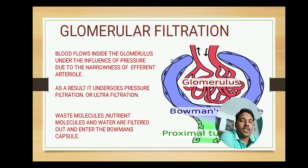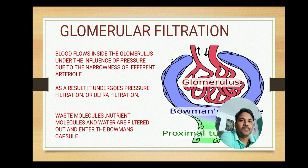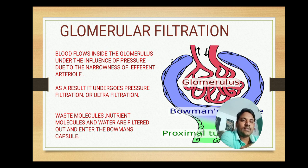In our previous class we have seen the structure of the nephron with the Malpighian body, which contains the Bowman's capsule and glomerulus. Here, how this glomerulus will filter — firstly, the blood flows inside the glomerulus under the influence of pressure due to the narrowness of the afferent arteriole. Through the afferent arteriole the blood enters the glomerulus, but as the afferent arteriole is narrow, there is pressure exerted within the glomerulus that squeezes the wastes into the Bowman's capsule.